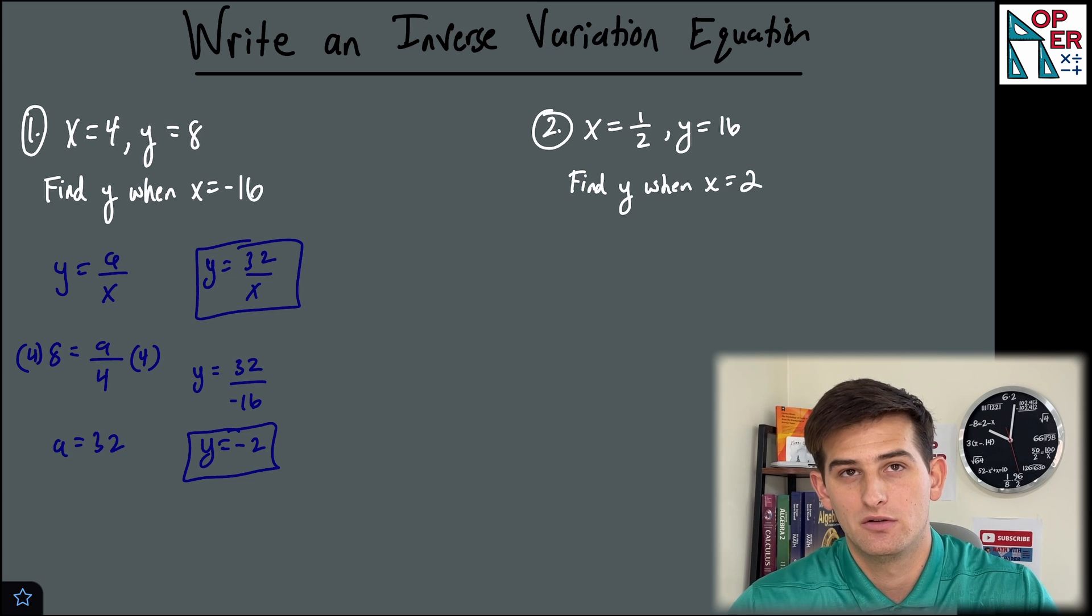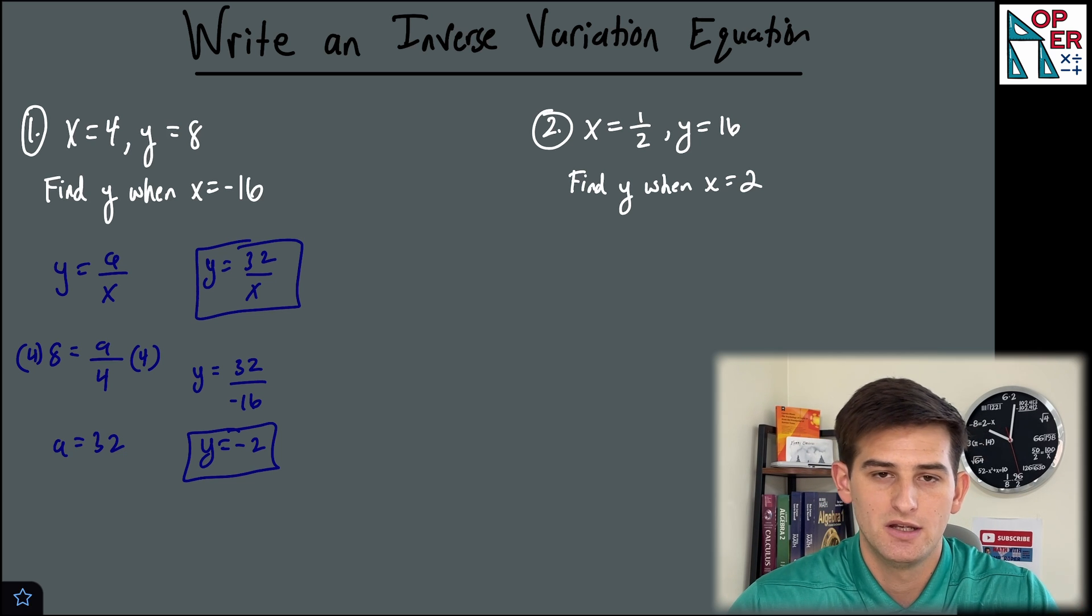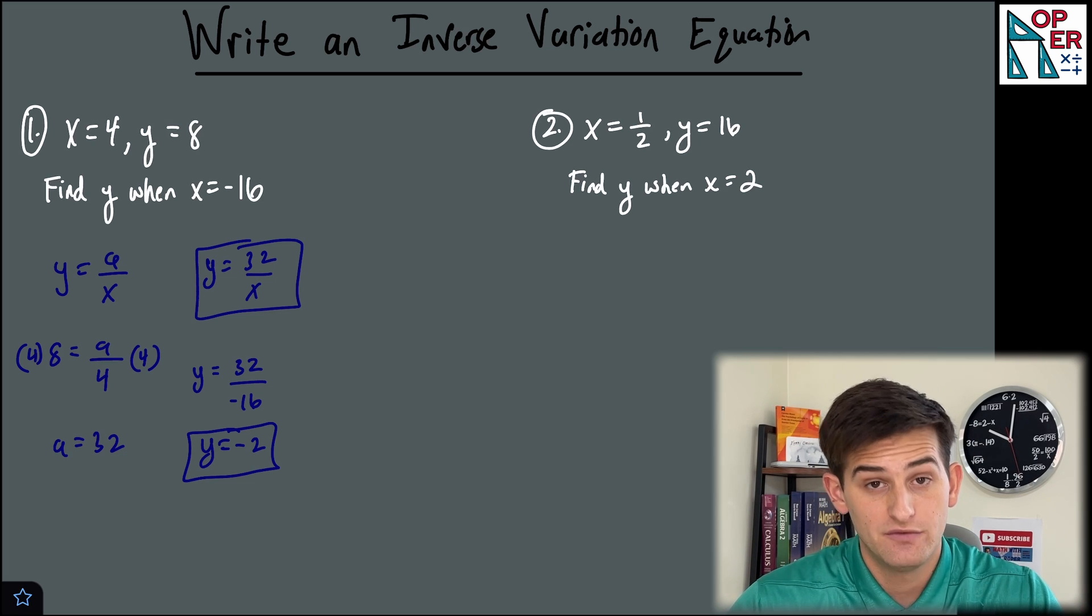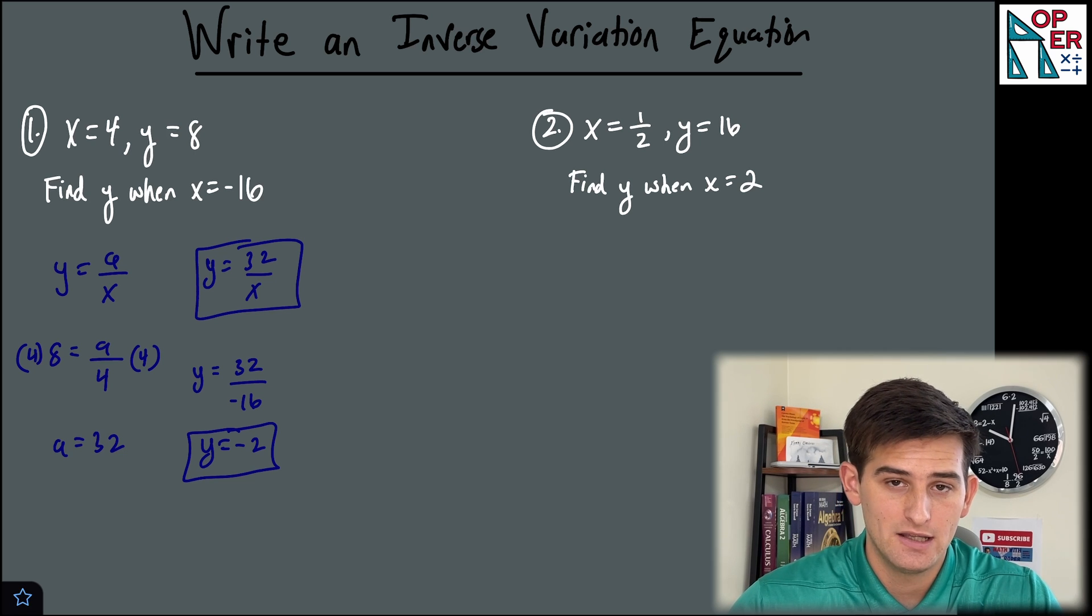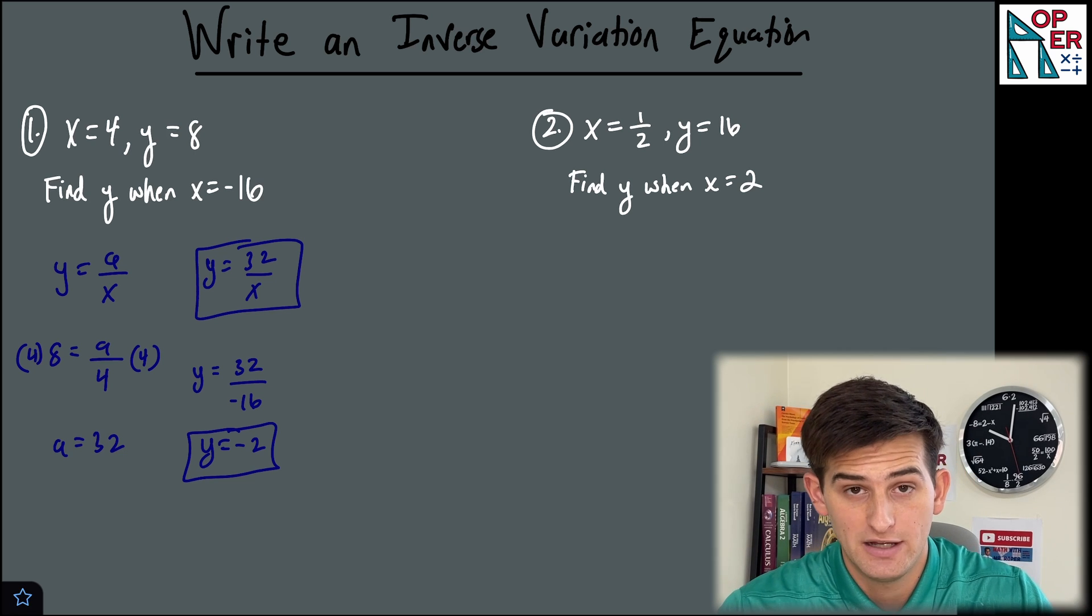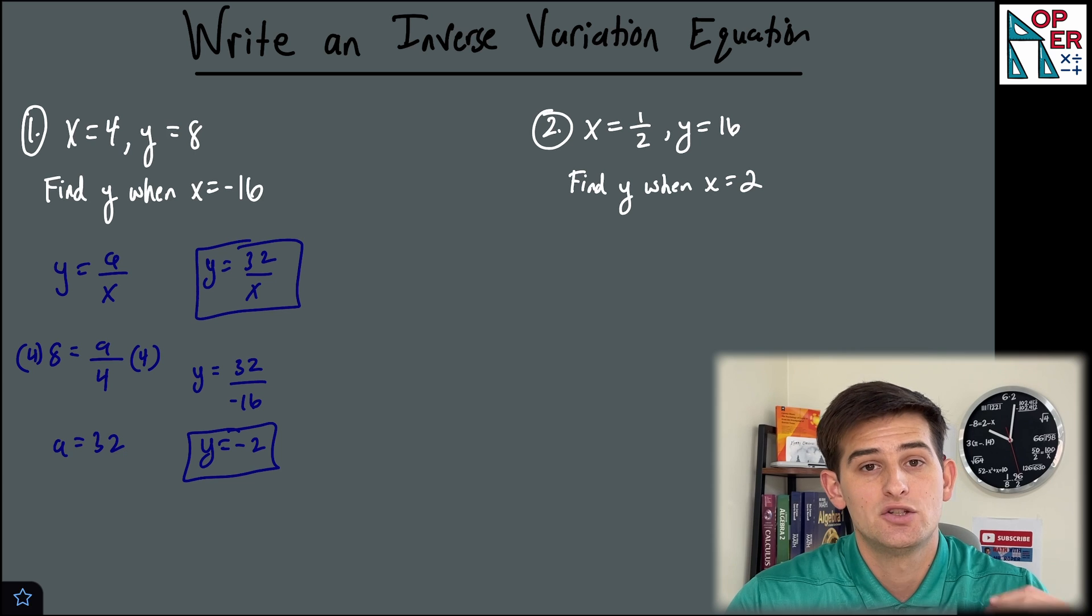Now remember for our indirect variation or inverse variation, our products of x and y in, let's say we're looking at a table of values, our products x and y should be constant, right? And that's equal to a.